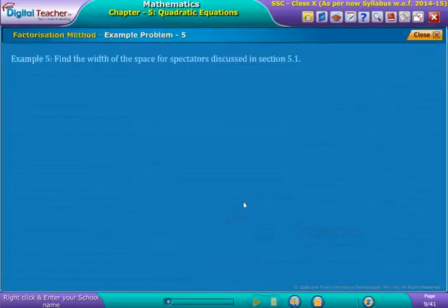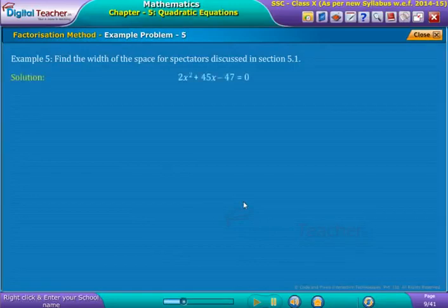From the Cocoa code example, we obtained that if the width of space for spectators is x meters, then the satisfied equation we obtained is 2x² plus 45x minus 47 is equal to 0.